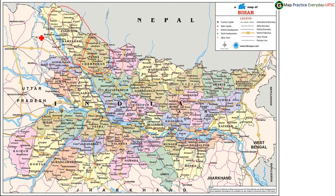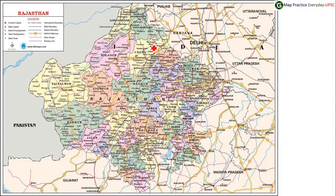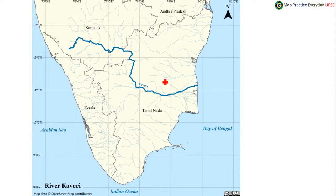The riots situation involved Churu district, Jhunjhunu district, Nagaur, and Sikar — these four districts were in news from Rajasthan. Only Churu and Jhunjhunu have a boundary with Haryana. The Kaveri river was also seen in the Supreme Court verdict; Kaveri originates in Talakaveri and terminates in the Bay of Bengal.